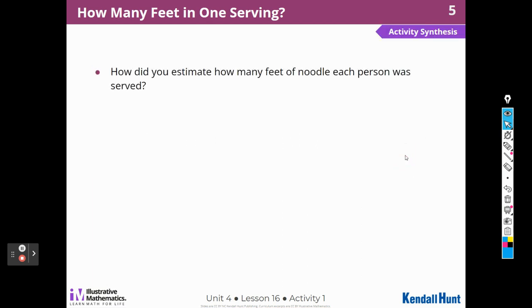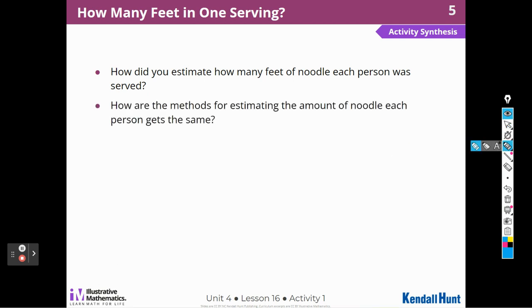How did you estimate how many feet the noodle person was being served? Well, we just talked about that, right? I changed the 10,119 feet to 10,000. And then I said, how many 400s are in 10,000. I started off with 400 times two, and then 400 times 20. And that was 8,000. This was 800. And then I went to 400 times five, and that gave me 2,000. So I knew that it had to be around 25.